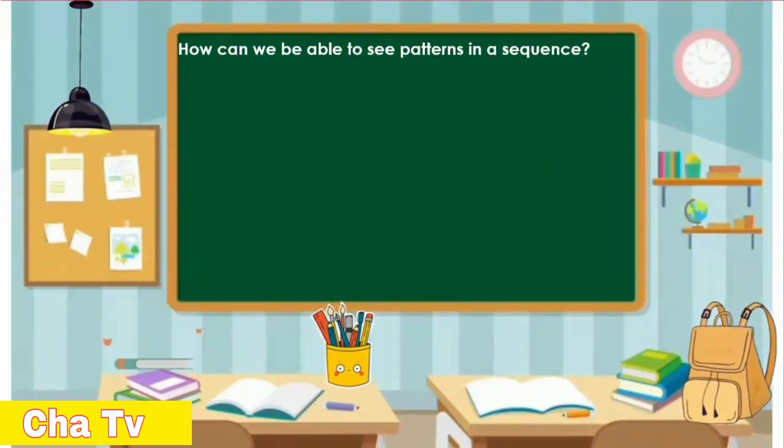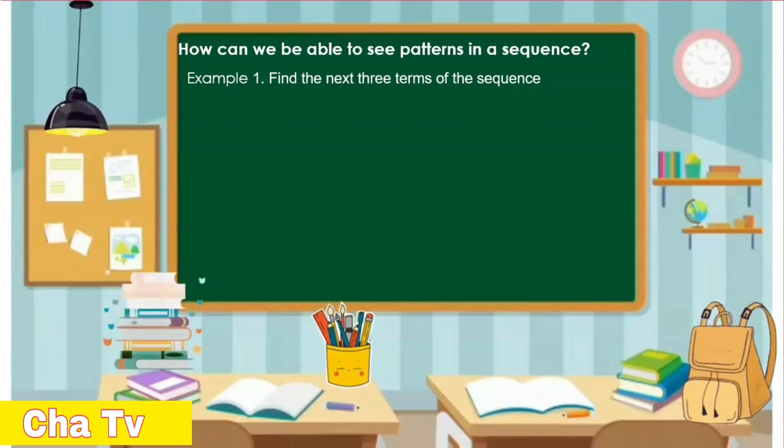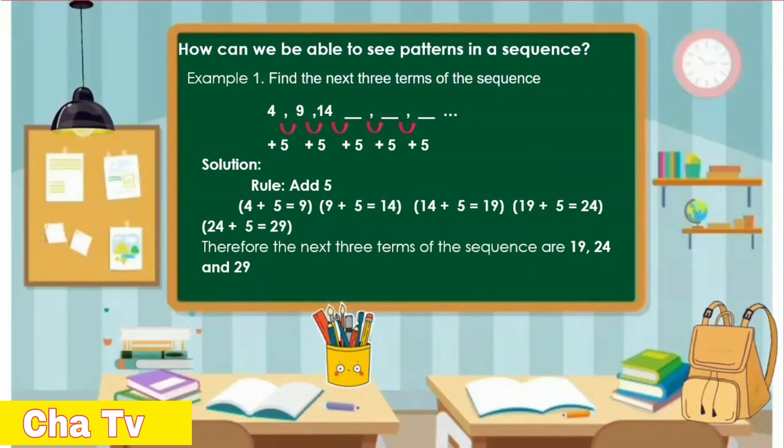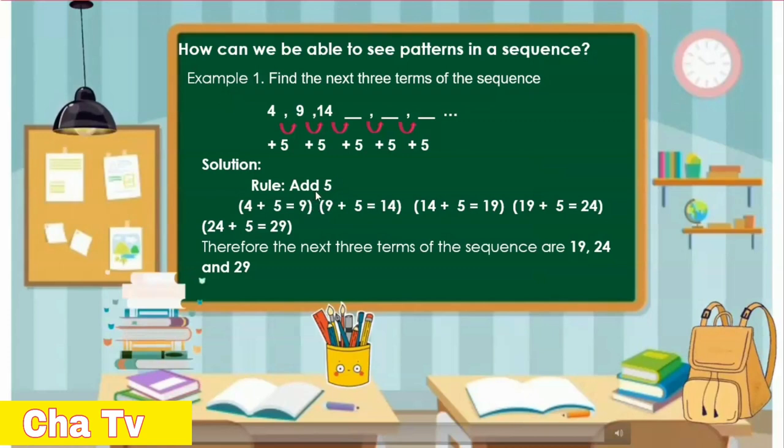How can we see patterns in a sequence? Let me give you an example. Find the next three terms of the sequence. The rule for this problem is add 5. So 4 plus 5 is 9, 9 plus 5 is 14, 14 plus 5 is 19, 19 plus 5 is 24, and 24 plus 5 is 29. Therefore, the next three terms of the sequence are 19, 24, and 29.